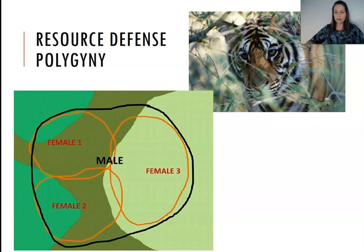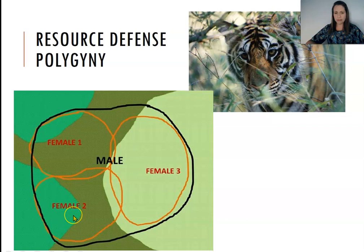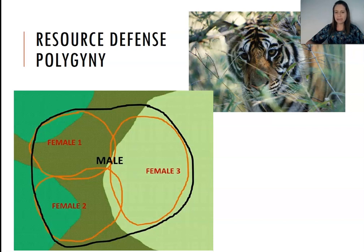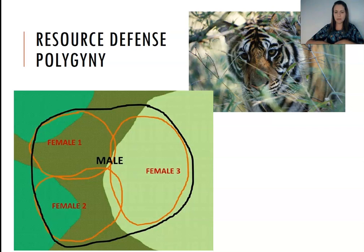This is typically associated with resources — food resources, shelter, places to hide. Different color patches represent different resource levels, with darker green showing higher resource levels. The two females on the edge have smaller territories because it's high-valued resource, while female three has a lower-resource territory and so her territory covers more area. Looking at this in terms of polygamy, this male with his much larger territory that he defends essentially includes the females within that territory, and it's these females that the male is able to reproduce with. We see this pattern for different subspecies of tigers across their entire habitat.